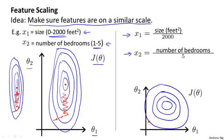And if you run gradient descent on a cost function like this, then gradient descent, you can show mathematically, can find a much more direct path to the global minimum, rather than taking a much more convoluted path where it's trying to follow a much more complicated trajectory to get to the global minimum.